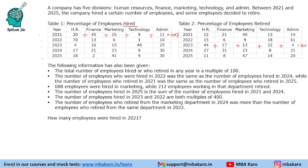The number of employees hired in 2022 was the same as the employees hired in 2024. The number of employees who retired in 2021 was the same as the number who retired in 2025. So hired in 2022 equals hired in 2024, and retired in 2021 equals retired in 2025. In marketing, 688 employees were hired and 212 retired.